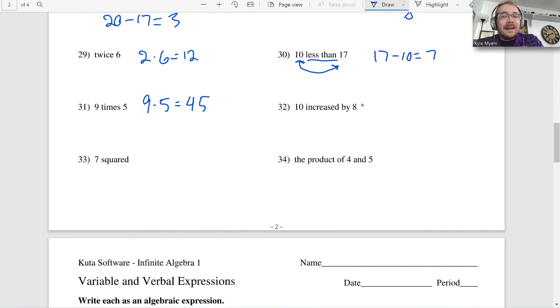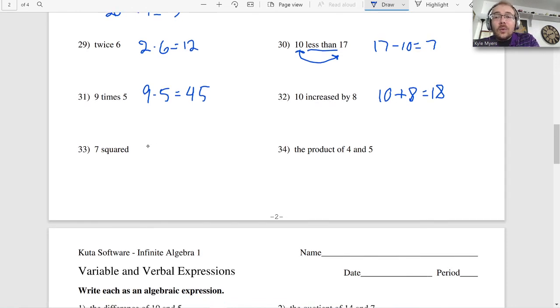10 increased by 8. That's plus. 18. 7 squared. Again, 7 times 7. That's 49. And the product of 4 and 5. Meaning times. So I get 20.